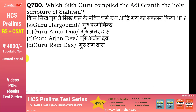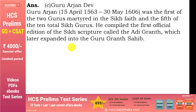Guru Arjan Dev Ji — option C. ये पाँचवें Sikh Guru थे और पहले दो Sikh gurus में से एक जो Sikhism के लिए शहीद हुए. इन्होंने Adi Granth का संकलन किया जो बाद में expand होकर Guru Granth Sahib बना. इनकी हत्या Jahangir के orders पर हुई थी.